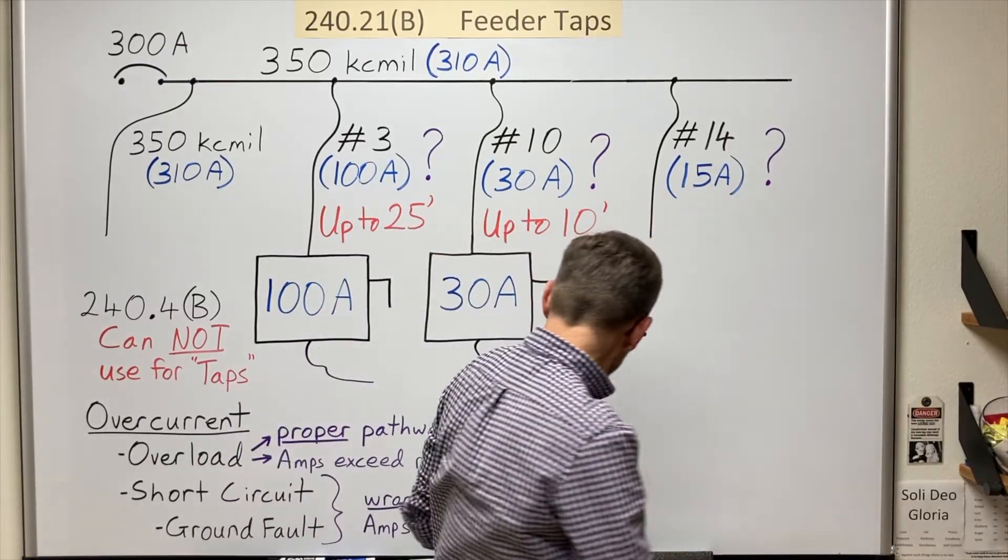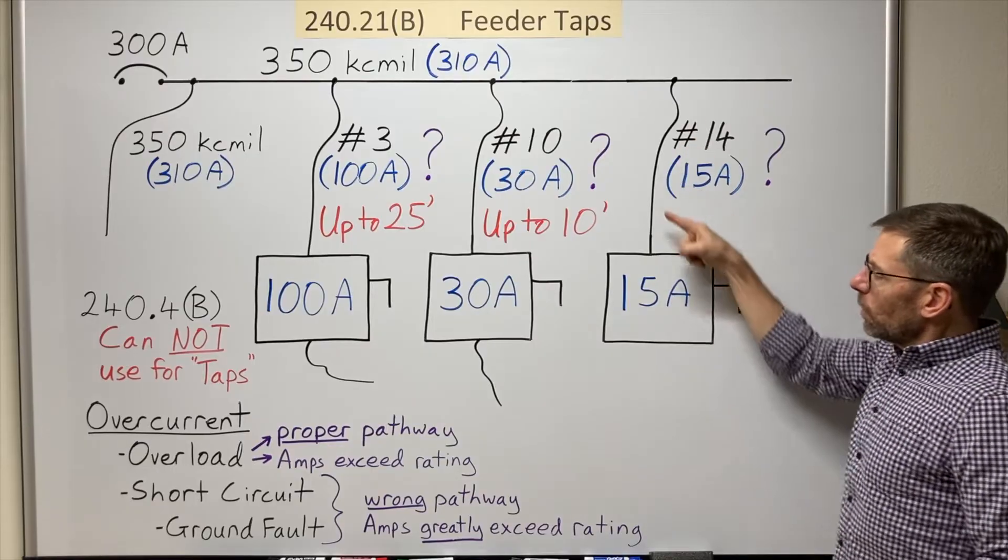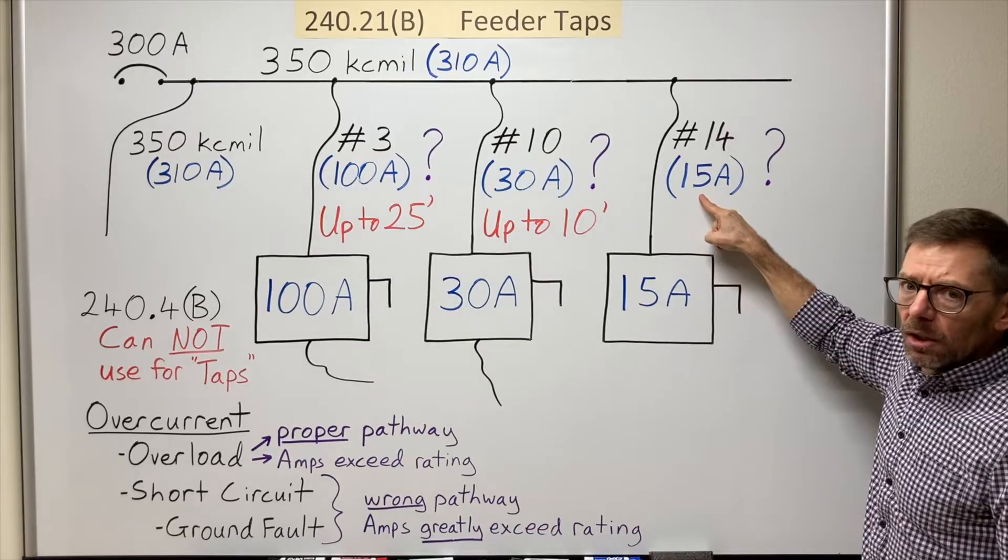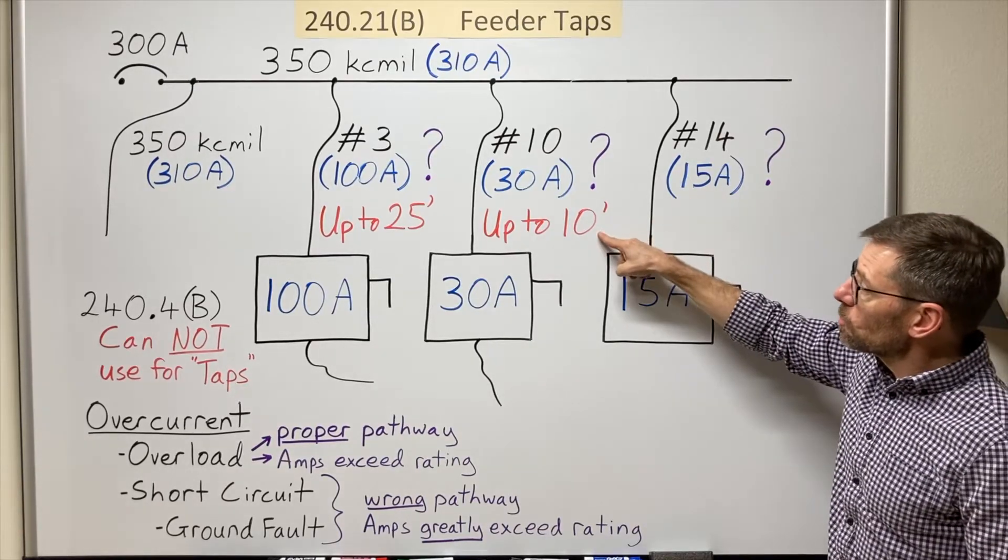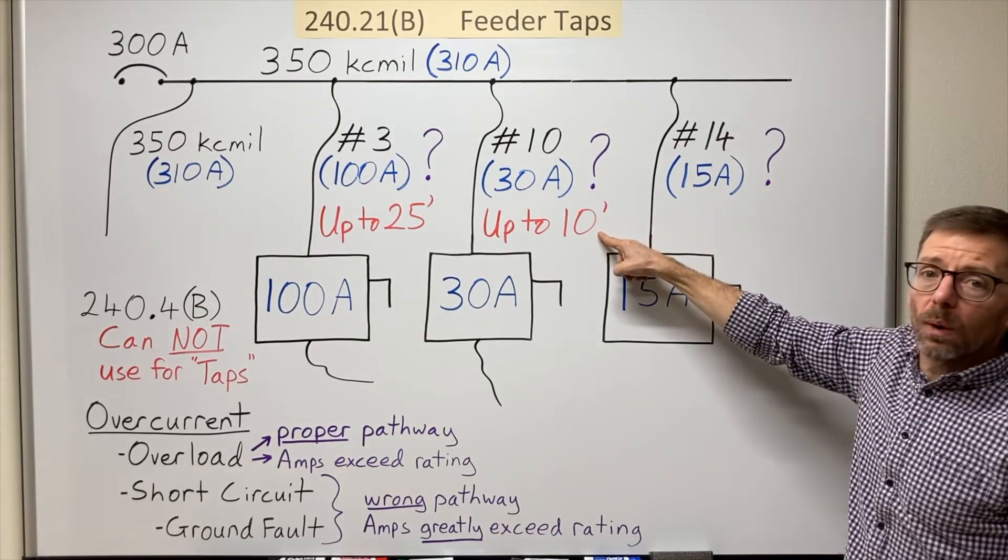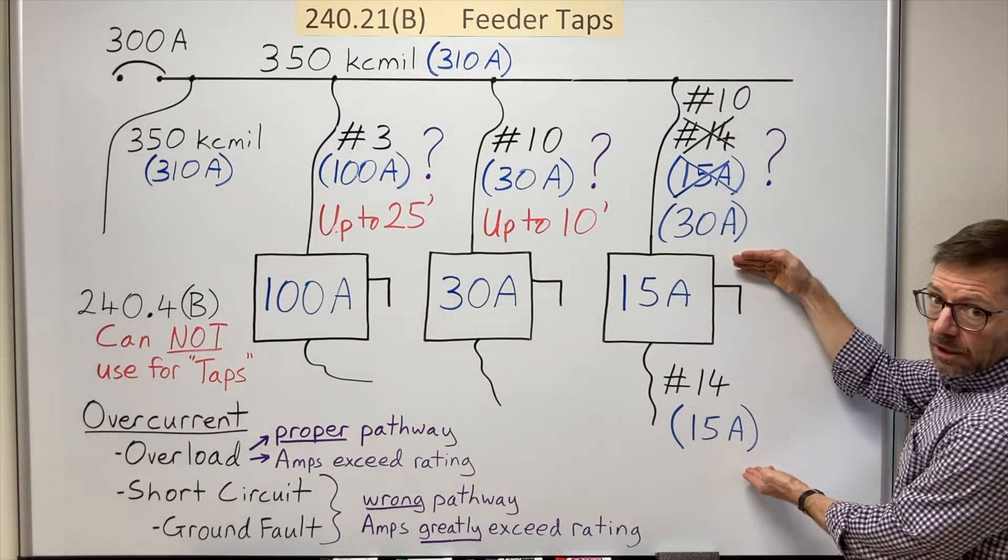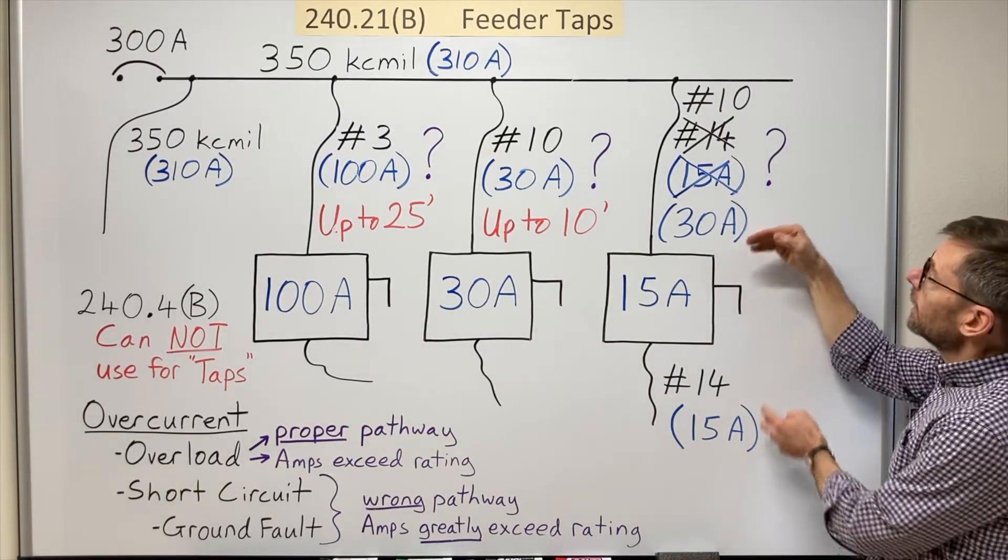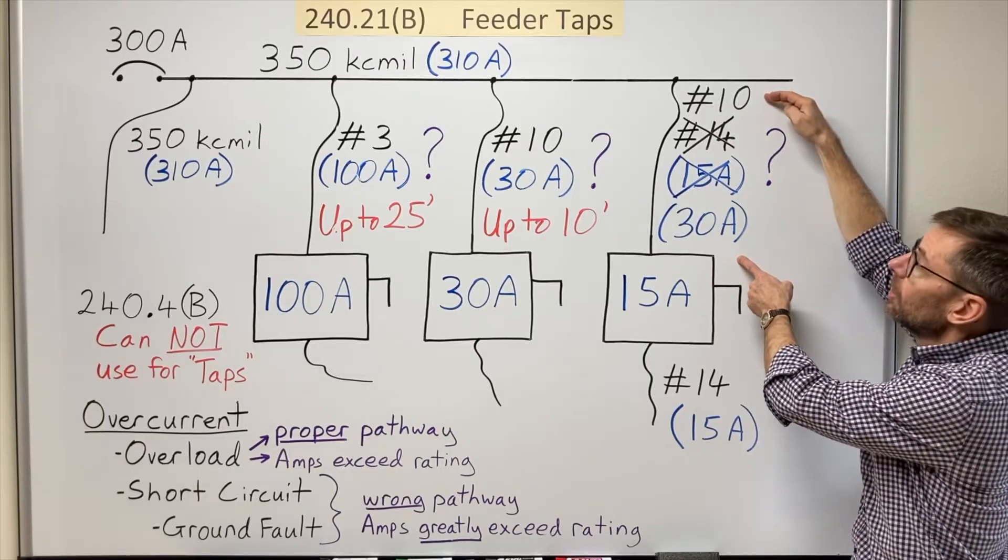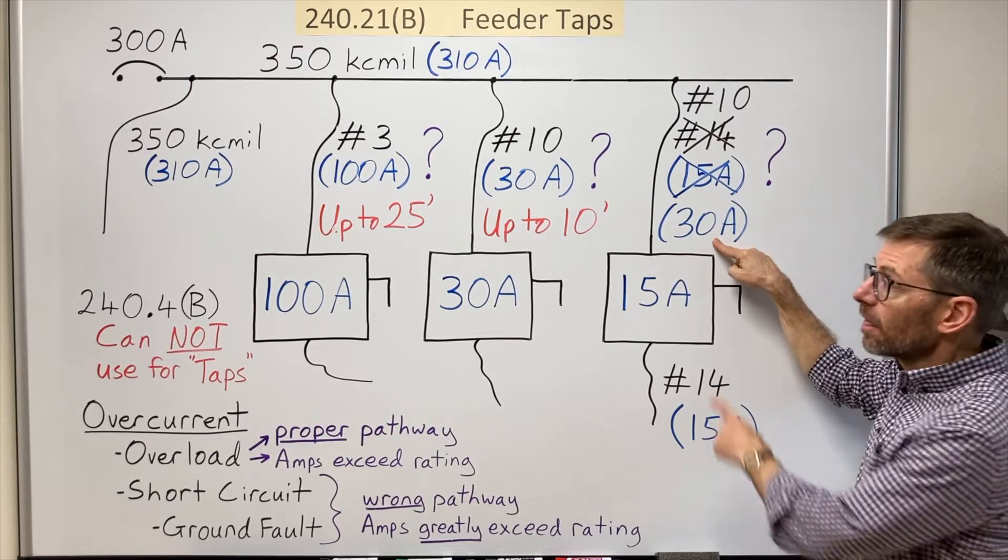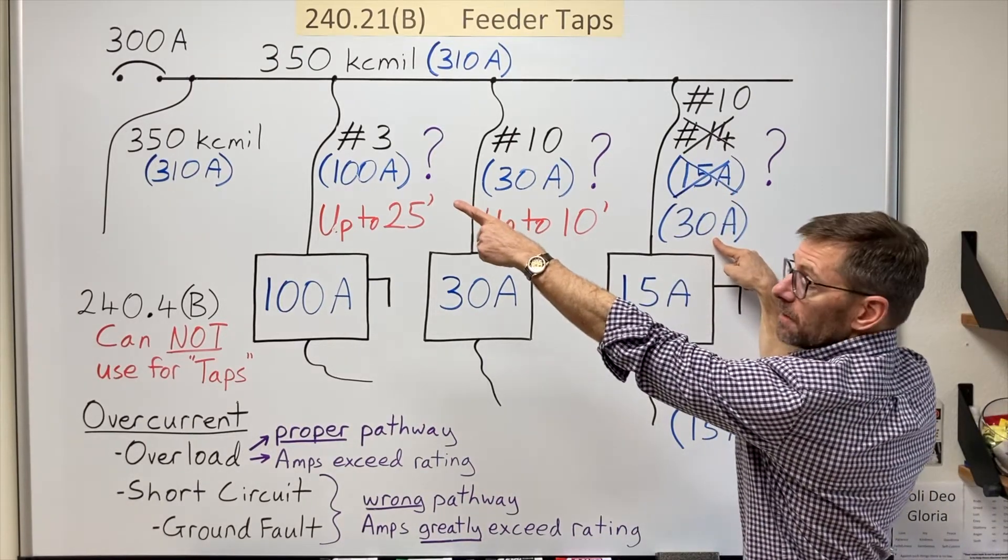So what would I do here? Even if I want to put this in a fifteen amp breaker, I can't go this small. If my minimum is one tenth, what would an option be? If all I need is a fifteen amp circuit, this part is fine. It's just the tap conductor needs to be upsized so its ampacity is at least one tenth of the upstream device.